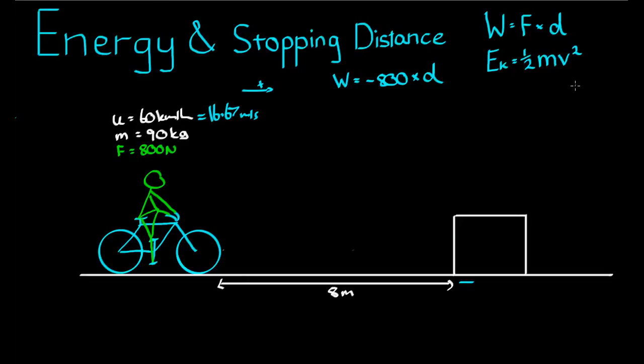But the kinetic energy of the bike has changed. The kinetic energy is now a half, m which is 90, times v, 16.67 squared, which comes to a total of 12,500. I have 12,500, but I think that's not accurate enough. Times 90 times 16.67, 12,500, we'll just leave it at 500 joules.